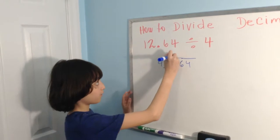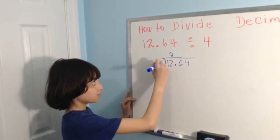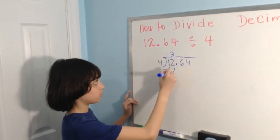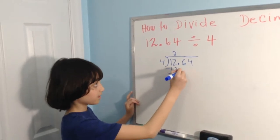4 times 3 is 12. Minus 12 is 0. Bring down the 6.